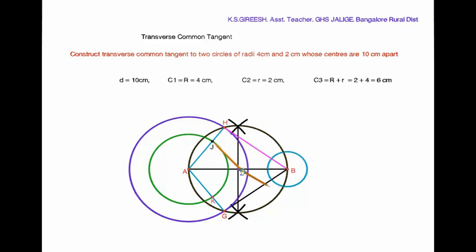With radius as BH, draw an arc on C2 with J as center. Mark the intersecting point of arc and C2 as S. Join JS and BS.